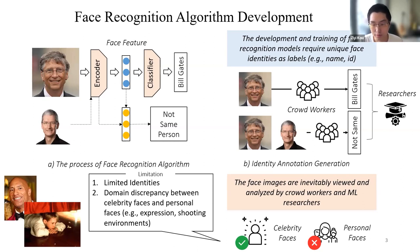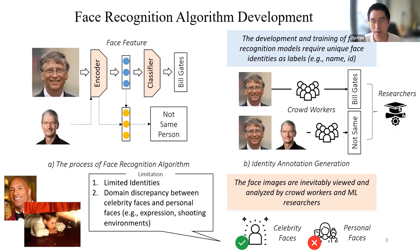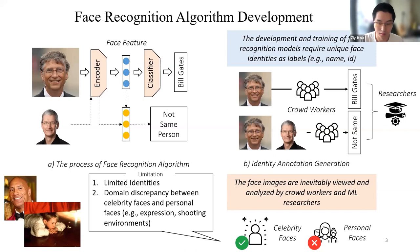As a result, many face recognition algorithms can only use public face image training data, which are mainly from celebrities. Using these images has many drawbacks. For example, the number of identities is limited because there are a limited number of celebrities worldwide. It is also highly likely that domain discrepancy exists between celebrity faces and personal faces due to differences in facial expression and shooting environment, as shown in the bottom-left photos.